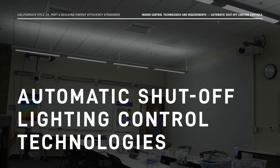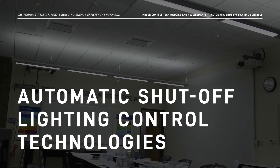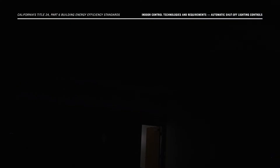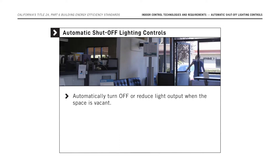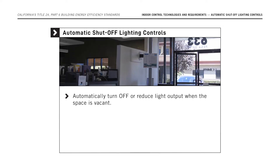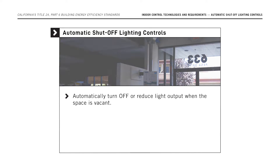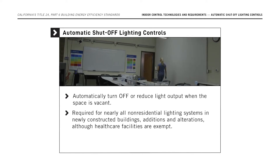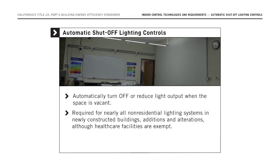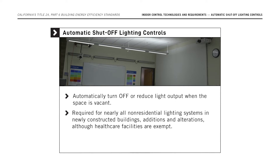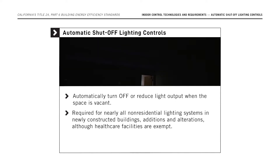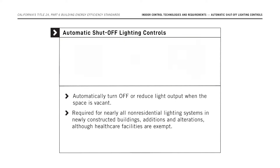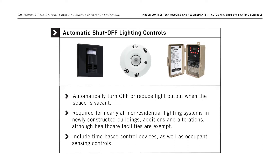What are automatic shutoff lighting controls? They are shutoff controls that automatically turn off or reduce light output when the space is vacant. They're required for nearly all non-residential lighting systems in newly constructed buildings, additions, and alterations, although health care facilities are exempt. Shutoff controls include time-based control devices as well as occupant sensing controls.